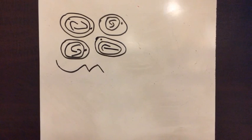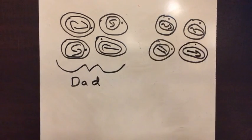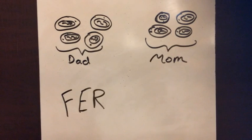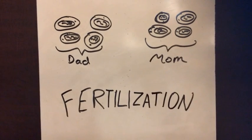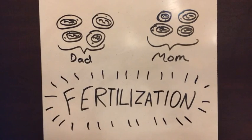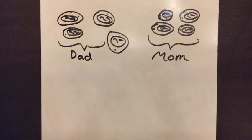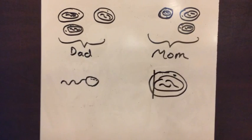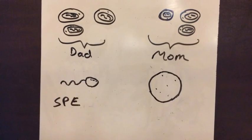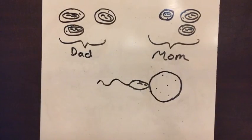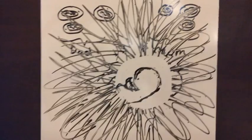Alright, now Dad has his gametes and Mom has her gametes. So now this is how fertilization works. Dad's gametes, known as the sperm, moves towards Mom's gametes, known as the egg. When contact is made between the two, an embryo is formed.